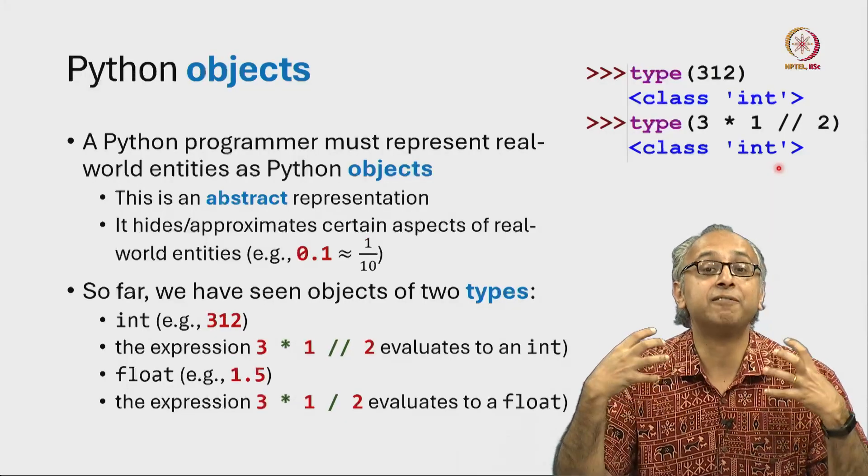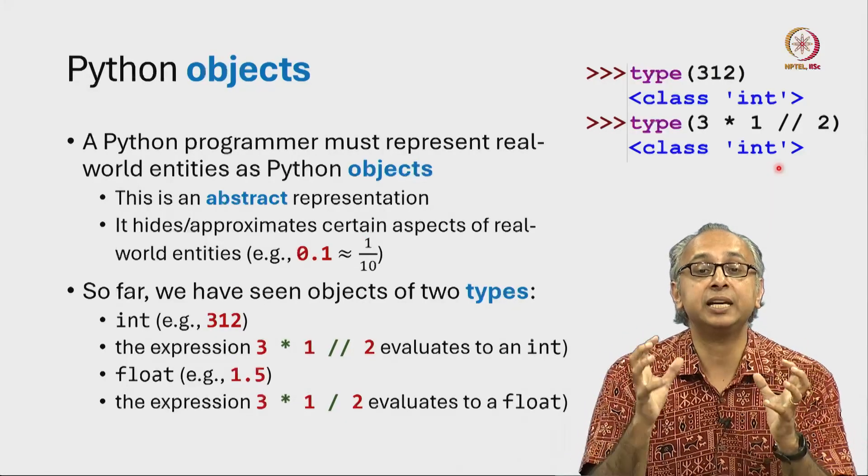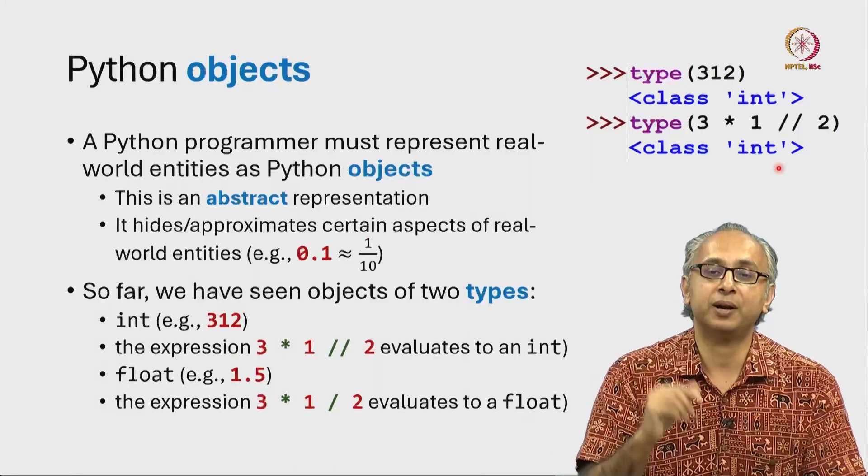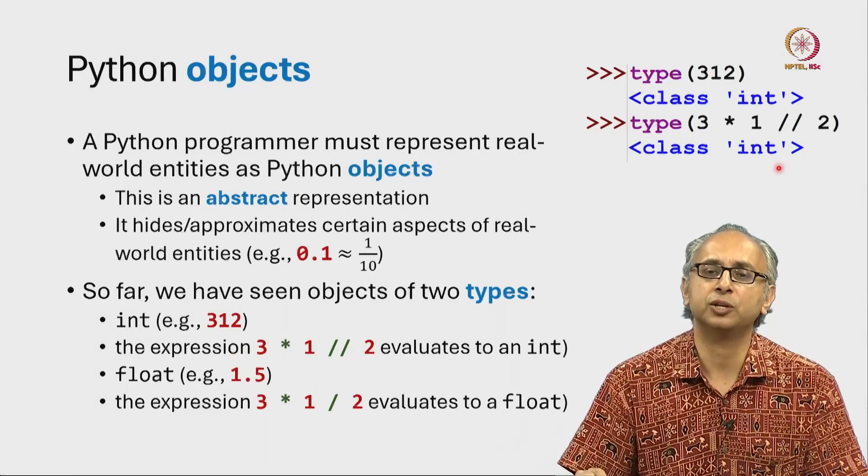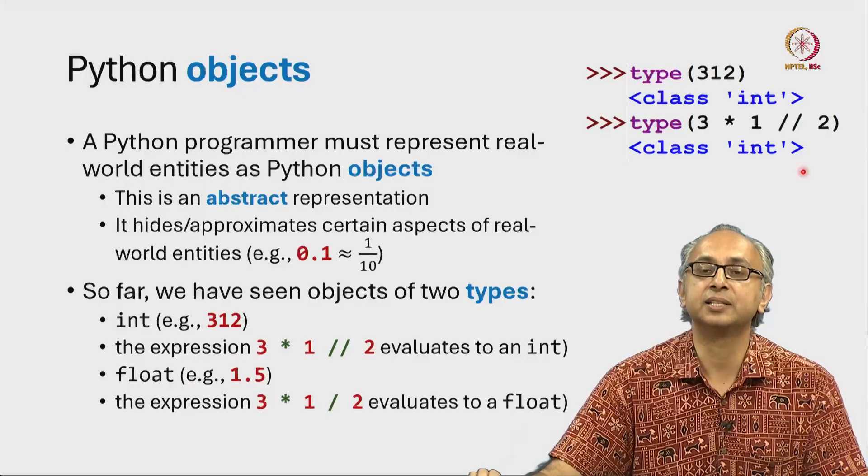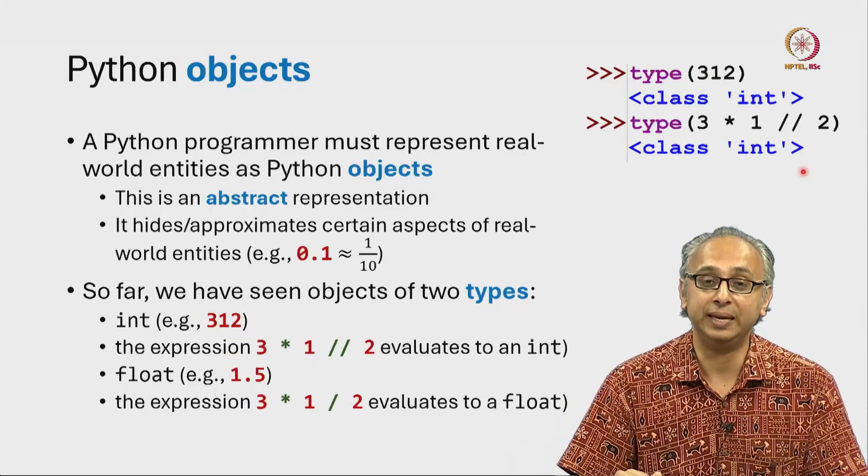The expression is first evaluated to result in a single object and then we are asking the type function, hey what is the type of this object? And again it tells us this is an object of that class called int.